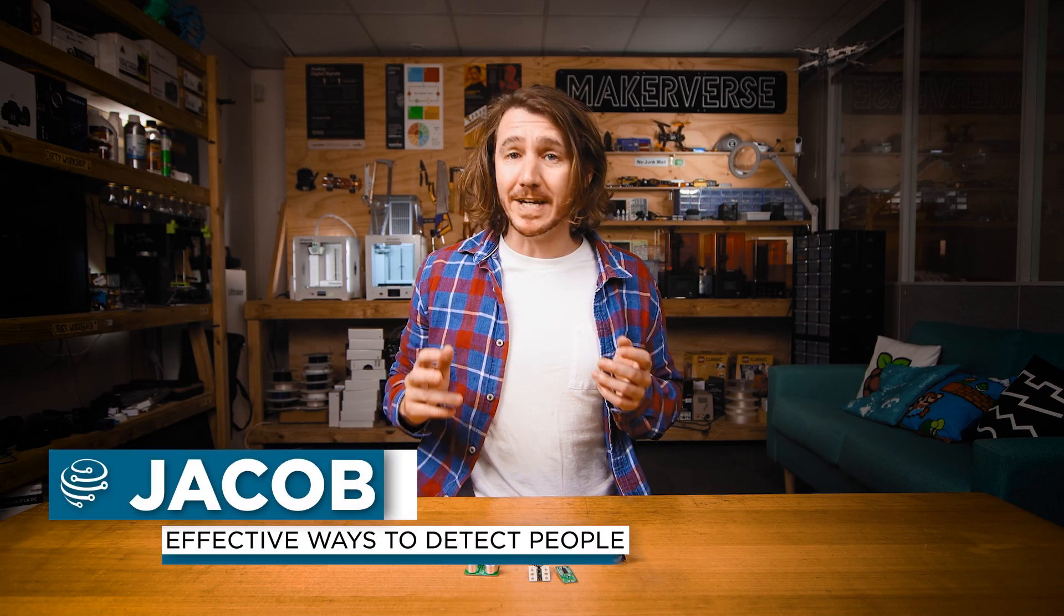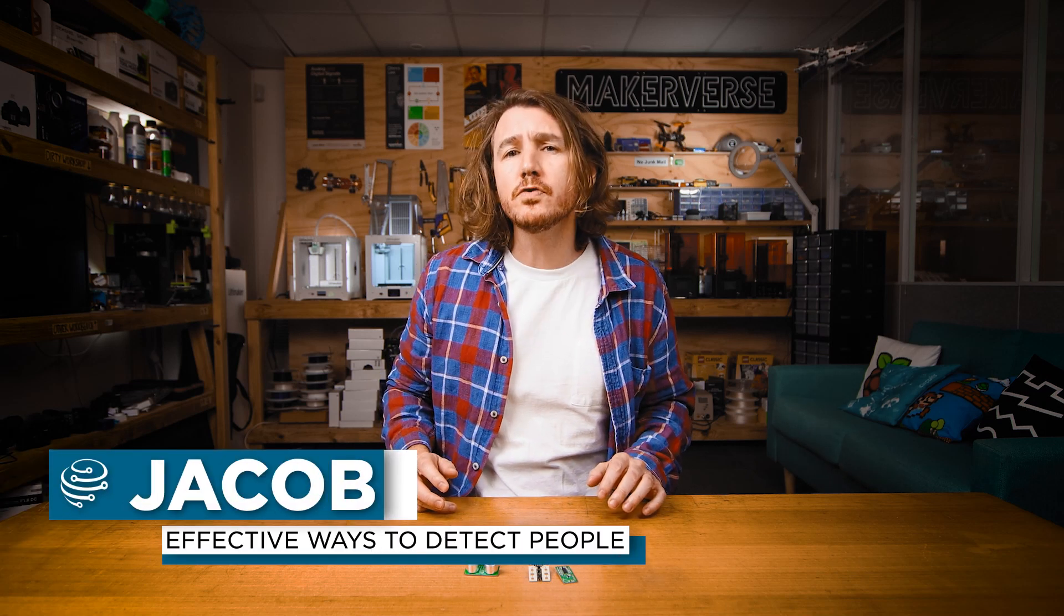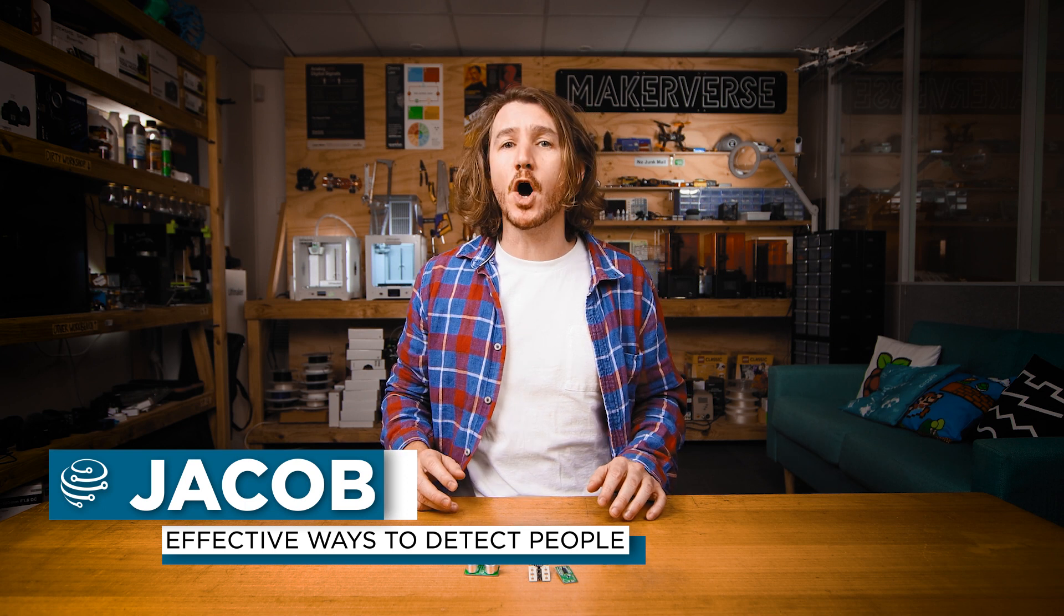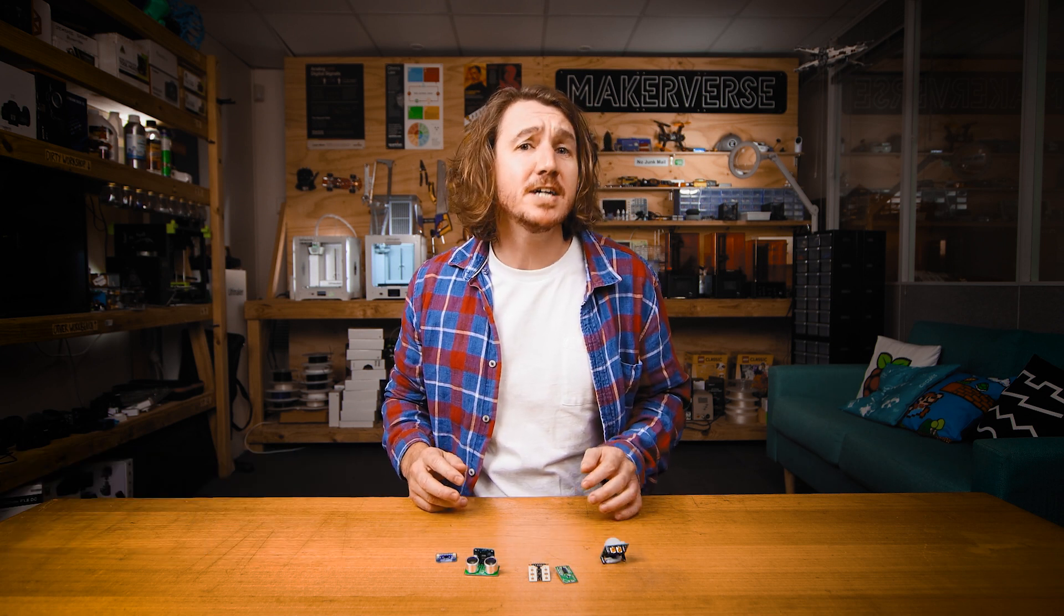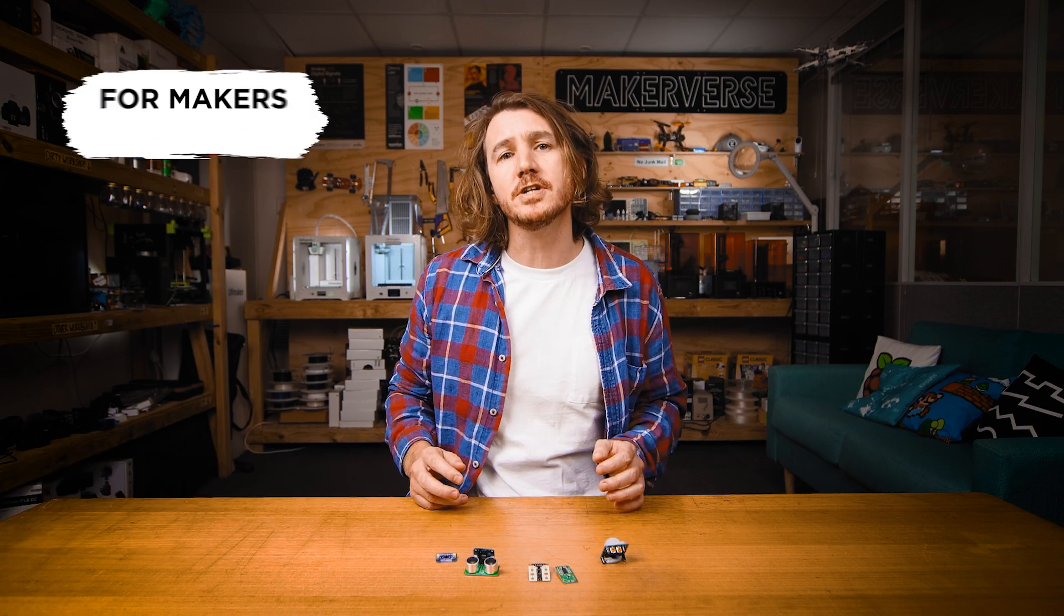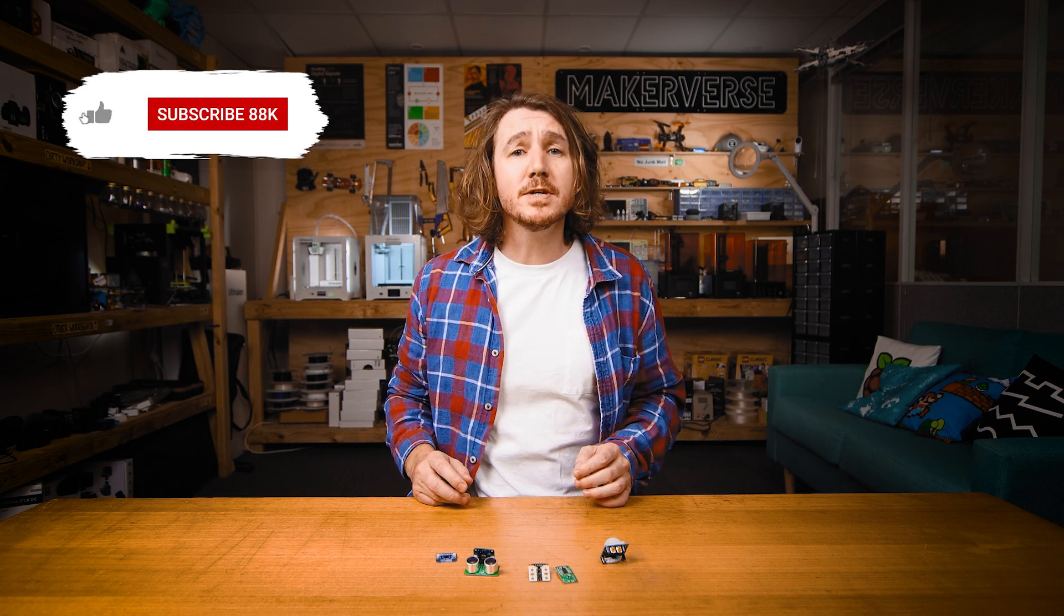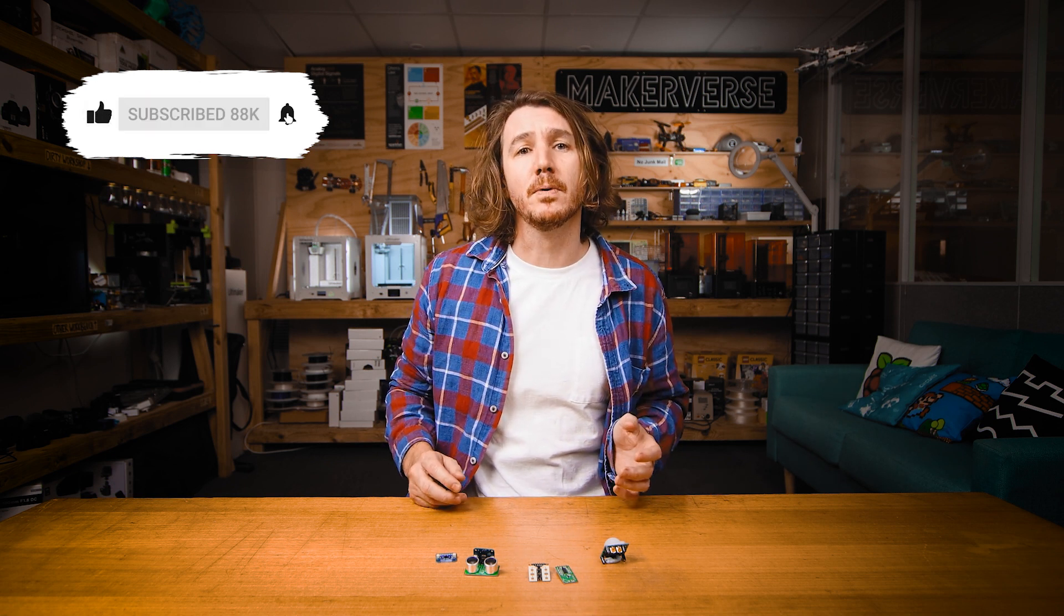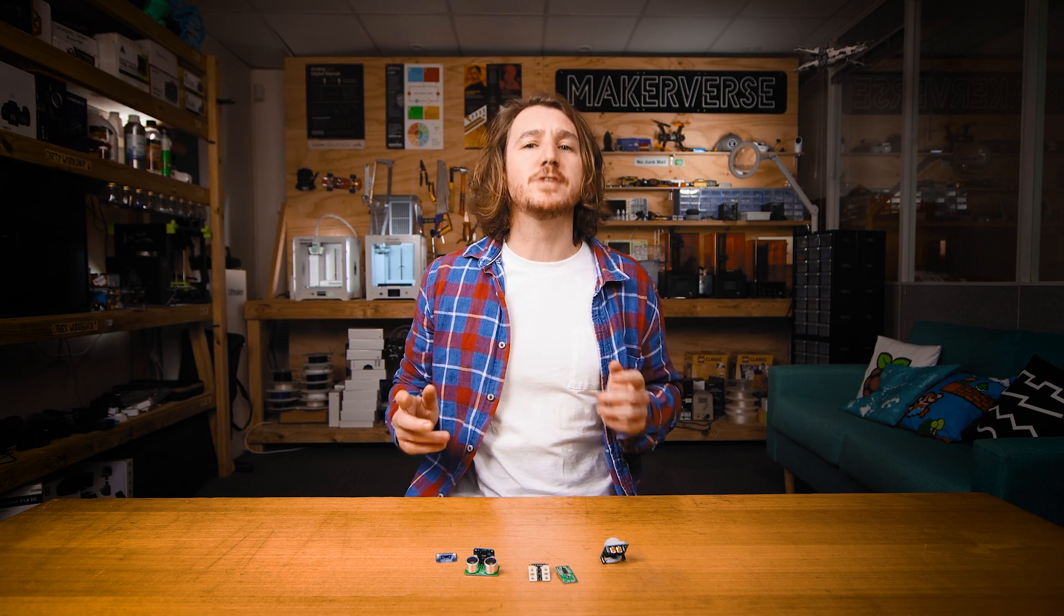Detecting if a person is or is not physically present can be useful for a range of Internet of Things and home automation applications, such as automatic lighting and security systems. Today, we're going to look at some common sensors that you can use to detect people, how they work, and when to use each one.